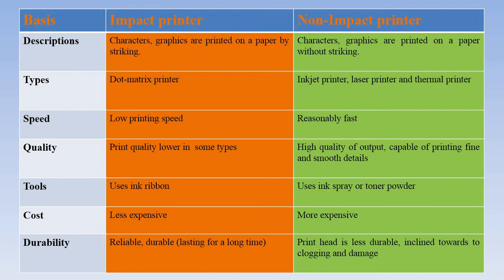The first topic is description. In an impact printer, characters and graphics are printed on paper by striking. Have you seen a typing machine? When you click on A, B, C, D or any key, it strikes — there is a print head that strikes the paper directly. Whatever key you press, for example A, then A will be printed on the paper. This is how we print using impact printers.